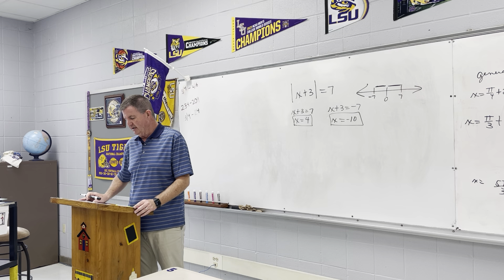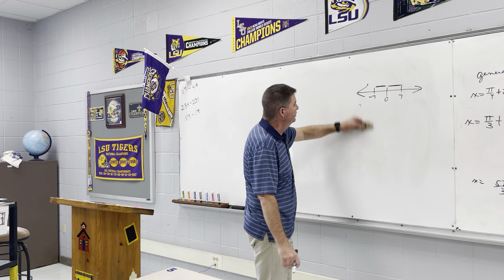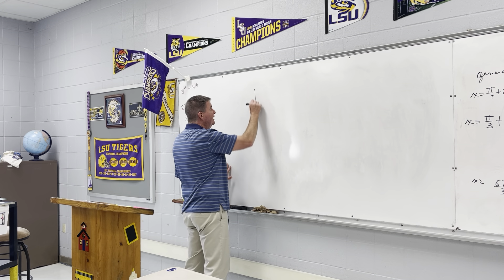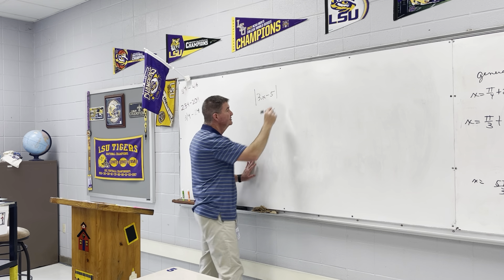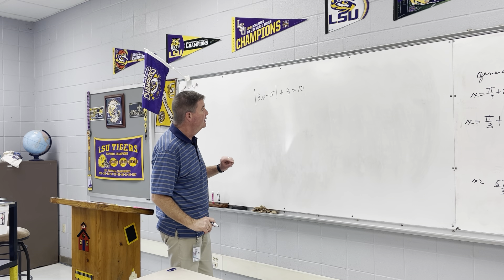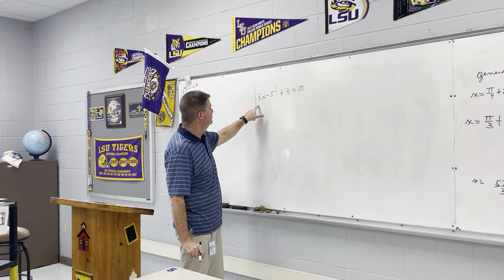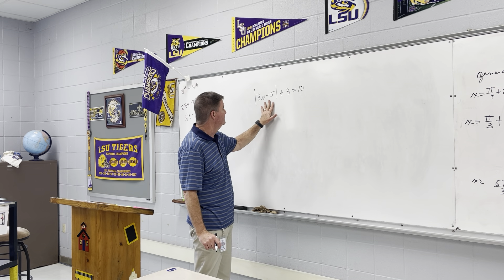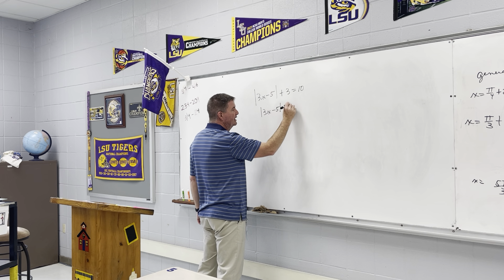Example number 3. It's the same exact way that we work it, just adding to it. We have the absolute value of 3x minus 5, plus 3 equals 10. The first thing we have to do is isolate the absolute value. This says plus 3, so I've got to get that 3 to the other side. So the absolute value of 3x minus 5 equals 7.